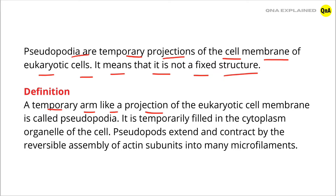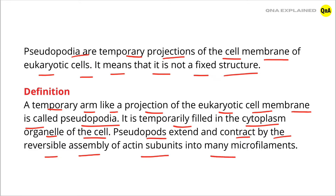A projection of the eukaryotic cell membrane is called Pseudopodia. It is temporarily filled in the cytoplasm organelle of the cell. Pseudopods extend and contract by the reversible assembly of actin subunits into many microfilaments.